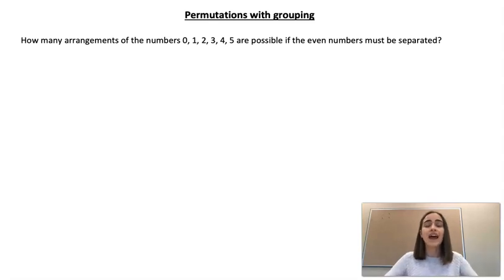Now the ways that that can happen are huge and it's actually quite difficult to calculate. The easier way to do it is to figure out how many arrangements would be possible if we had no restrictions at all. Then we can figure out how many arrangements would be possible where the even numbers were together. And then the number of arrangements where they're separate is going to be whatever's left over. So then we can do one minus the other to get our answer for this question.